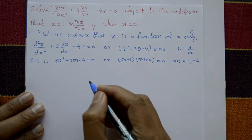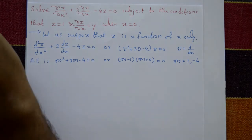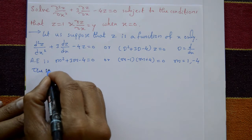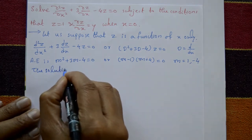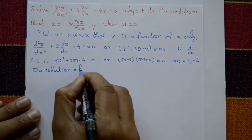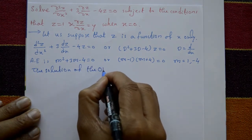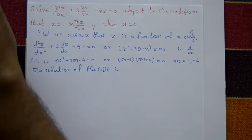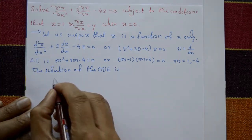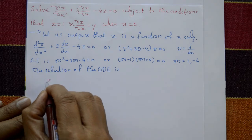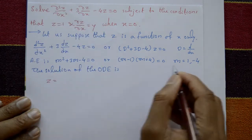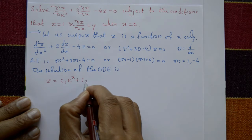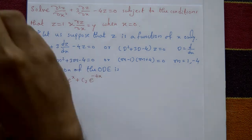The roots are different. The solution of the ODE — the complementary function — is z = c₁eˣ + c₂e^(−4x).